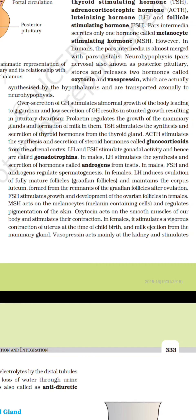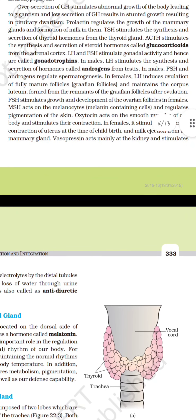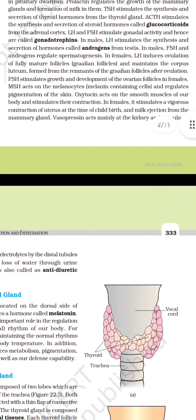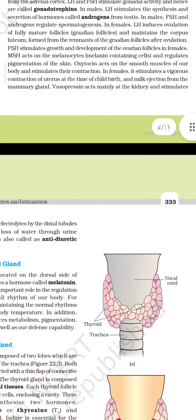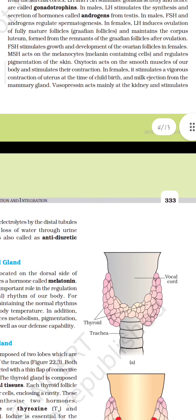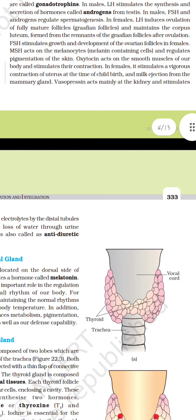Adrenocorticotrophic hormone stimulates the synthesis and secretion of steroid hormones called glucocorticoids from the adrenal cortex. Luteinizing hormone and follicle stimulating hormone stimulate gonadal activity and hence are called gonadotropins. In males, luteinizing hormone stimulates the synthesis and secretion of androgens from the testes. Follicle stimulating hormone and androgens regulate spermatogenesis. In females, luteinizing hormone induces ovulation of fully matured follicles (Graafian follicles) and maintains the corpus luteum formed from the remnants of the Graafian follicle after ovulation. Follicle stimulating hormone stimulates growth and development of ovarian follicles in females. Melanocyte stimulating hormone acts on melanocytes, i.e. melanin-containing cells, and influences pigmentation of the skin.